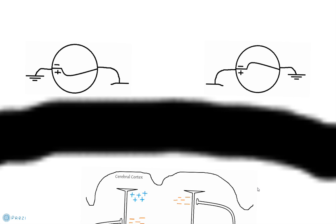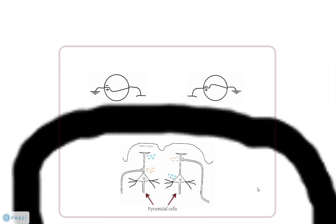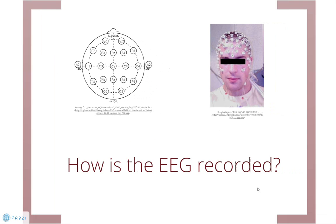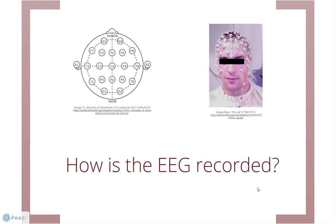So we know what we're measuring. How do we detect the signals? Seeing as we're trying to record an electrical signal, it makes sense to use electrodes. The electrodes are placed on the scalp at very specific locations.